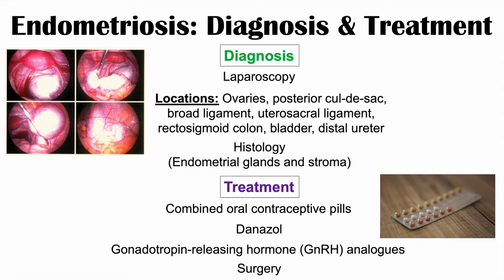In summary, diagnosis involves laparoscopy to find where endometrial tissue has traveled, and histology can confirm the tissue by identifying endometrial glands and stroma. Treatment includes combined oral contraceptive pills to regulate the menstrual cycle, danazole, gonadotropin-releasing hormone analogs, and in some cases surgery.